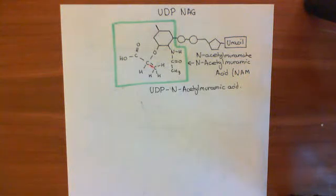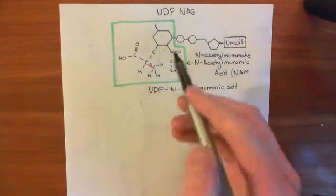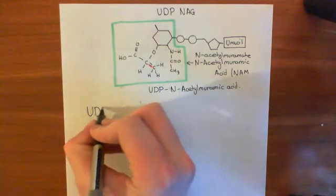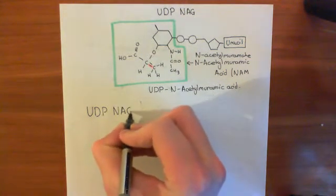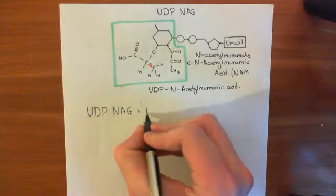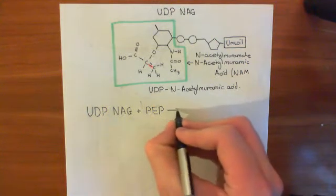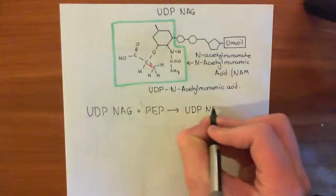Welcome to this next video on antibiotics targeting the bacterial cell wall biosynthesis. We've discussed how we added a phosphoenolpyruvate group to UDP-N-acetylglucosamine. So basically we took a UDP-N-acetylglucosamine molecule and a phosphoenolpyruvate molecule, which I'll denote PEP, and we synthesized a UDP-N-acetylmuramic acid molecule.